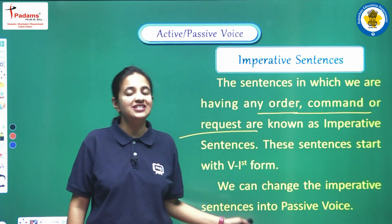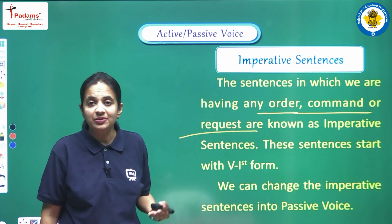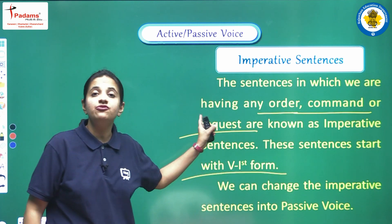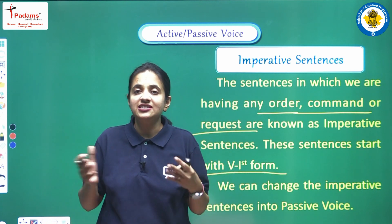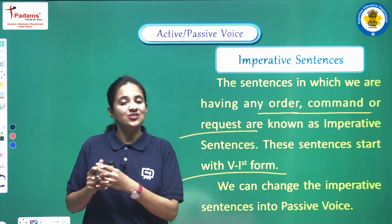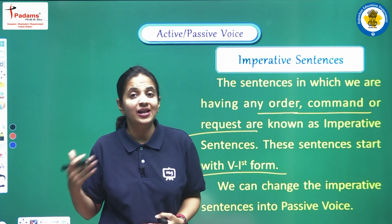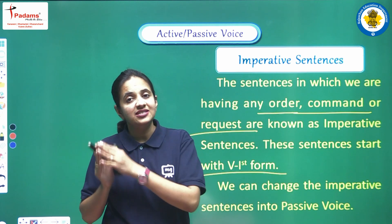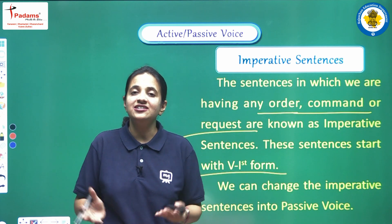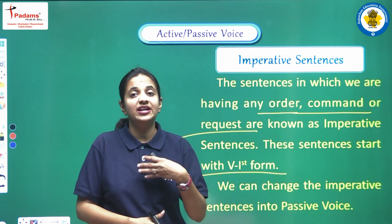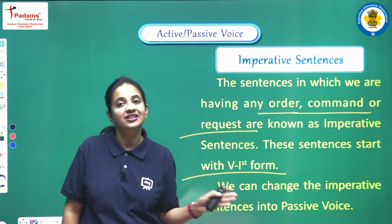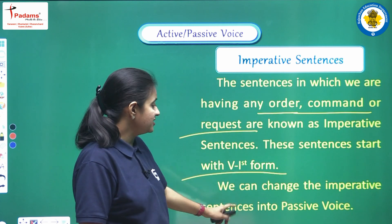One more important feature of imperative sentences is that they always start with the verb's first form. There is no subject at the beginning of the sentence. The sentence starts directly with the verb's first form, and the sentence will contain some kind of order, command, or request.